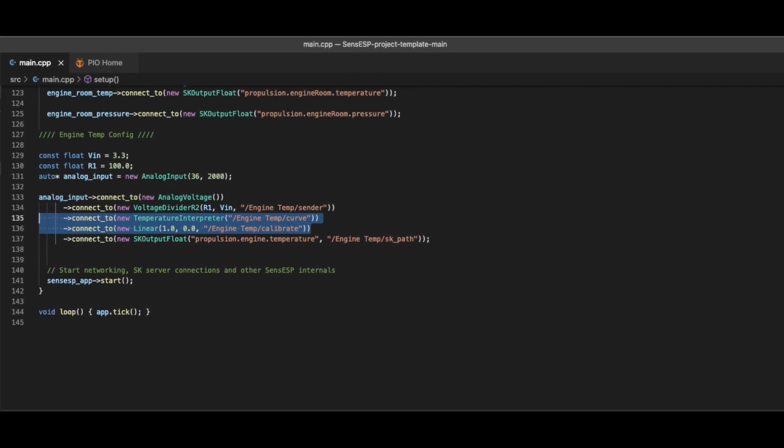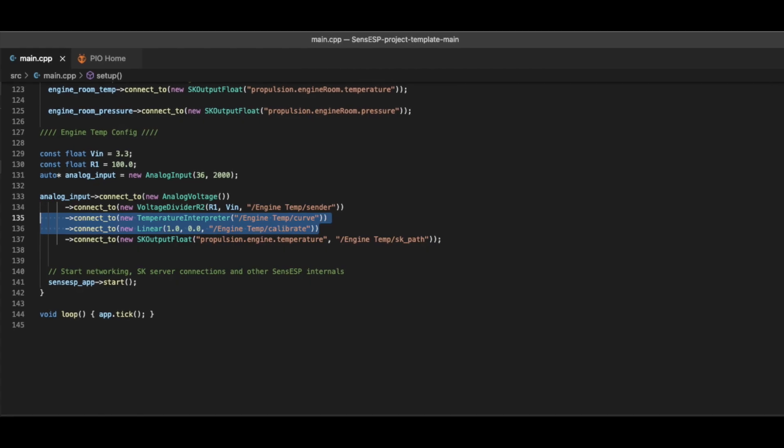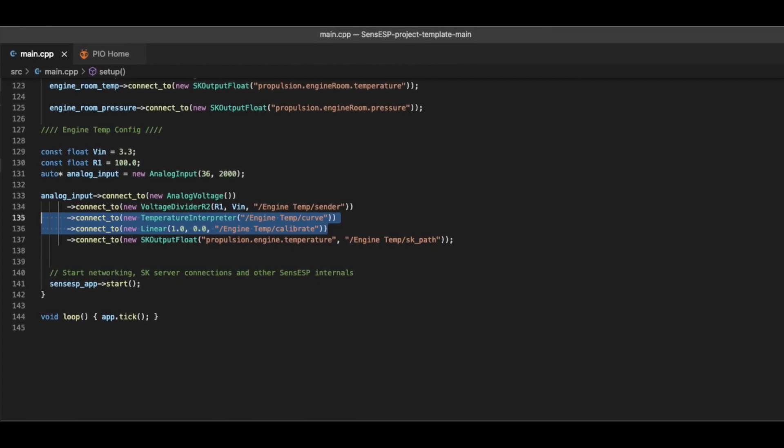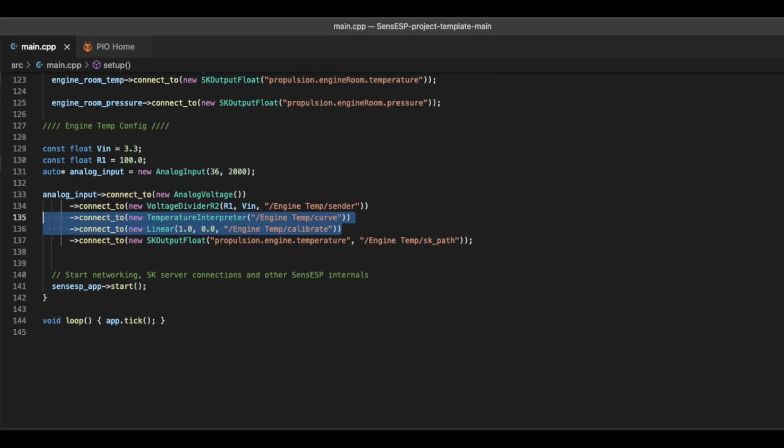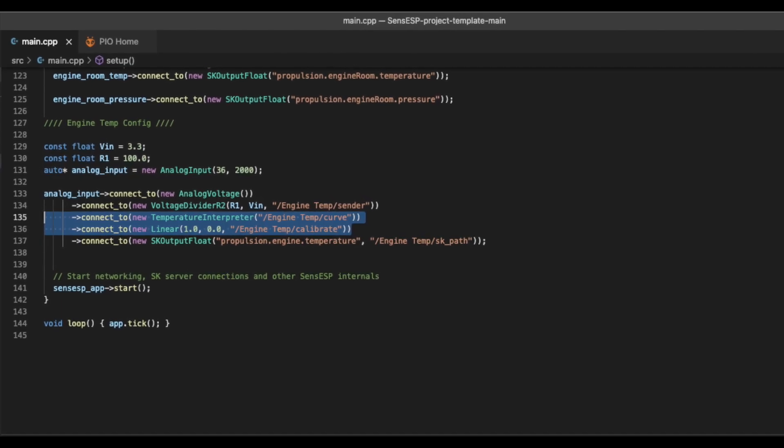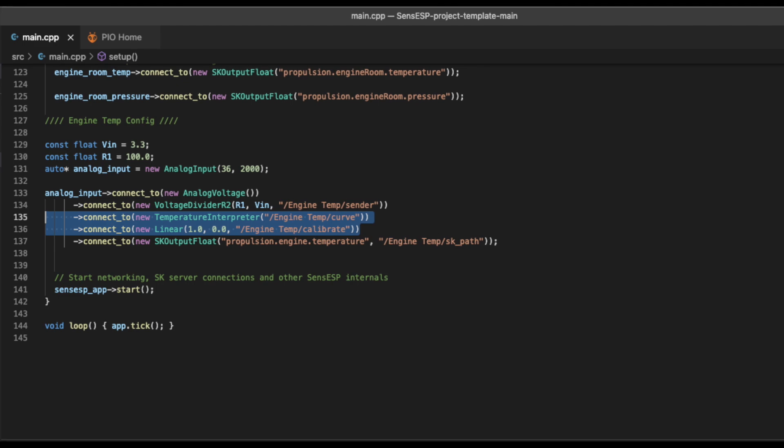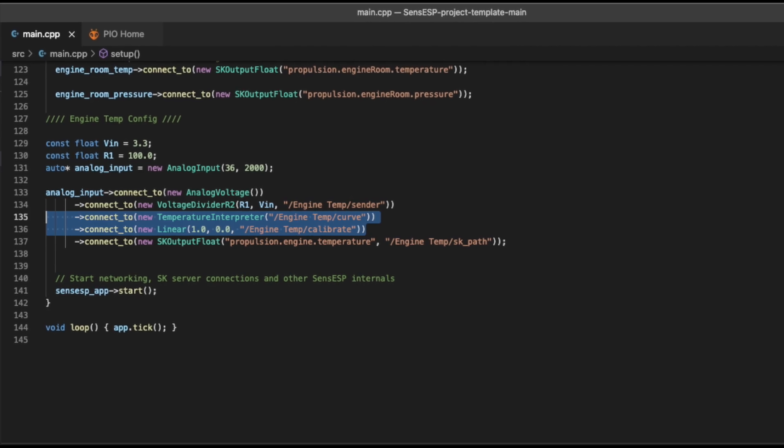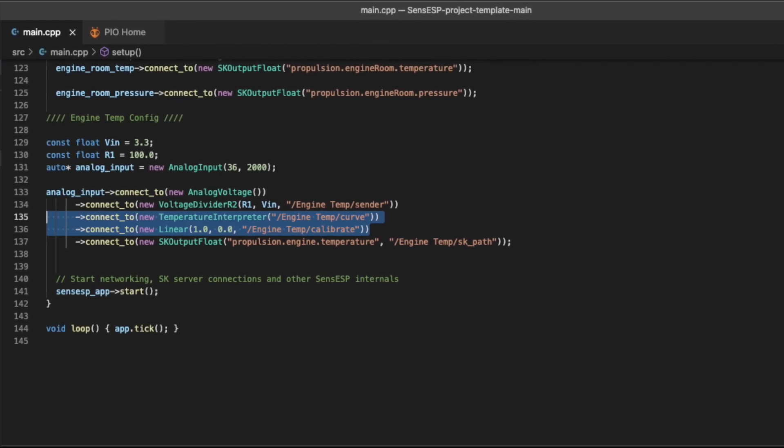So what it'll do is the output from the voltage divider calculation will be sent as the SK output flow to propulsion engine temperature. So the value you see there will actually be the resistance value that it thinks is the bottom half of that circuit, and that really helped me calculate those resistance values.